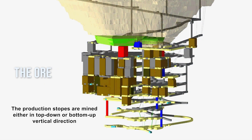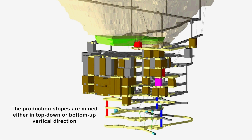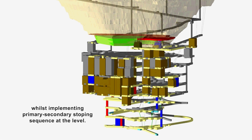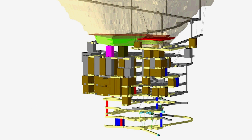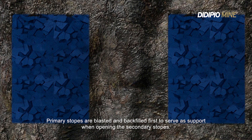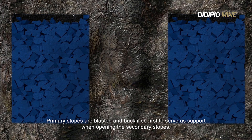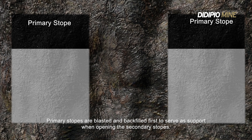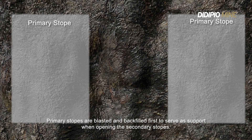The production stopes are mined either in the top-down or bottom-up vertical direction, whilst implementing the primary-secondary stoping sequence at the level. Primary stopes are blasted and backfilled first to serve as support when opening the secondary stopes.